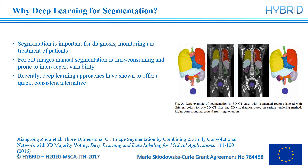Manual segmentation is also prone to inter-expert variability, meaning the precise segmentation depends on the expert, and even intra-expert variability, meaning the same expert will draw a different segmentation at a different time. Because of these factors, recently many deep learning approaches have been proposed, offering a quick and consistent alternative.